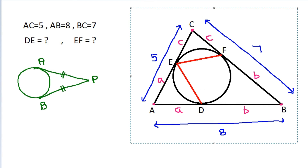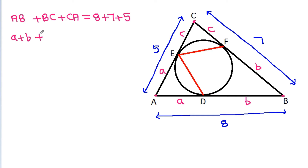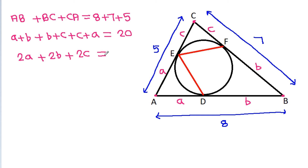Now, AB plus BC plus CA equals 8 plus 7 plus 5. AB is (a + b), BC is (b + c), and CA is (c + a), which equals 20. So 2a plus 2b plus 2c equals 20, meaning a plus b plus c equals 10.